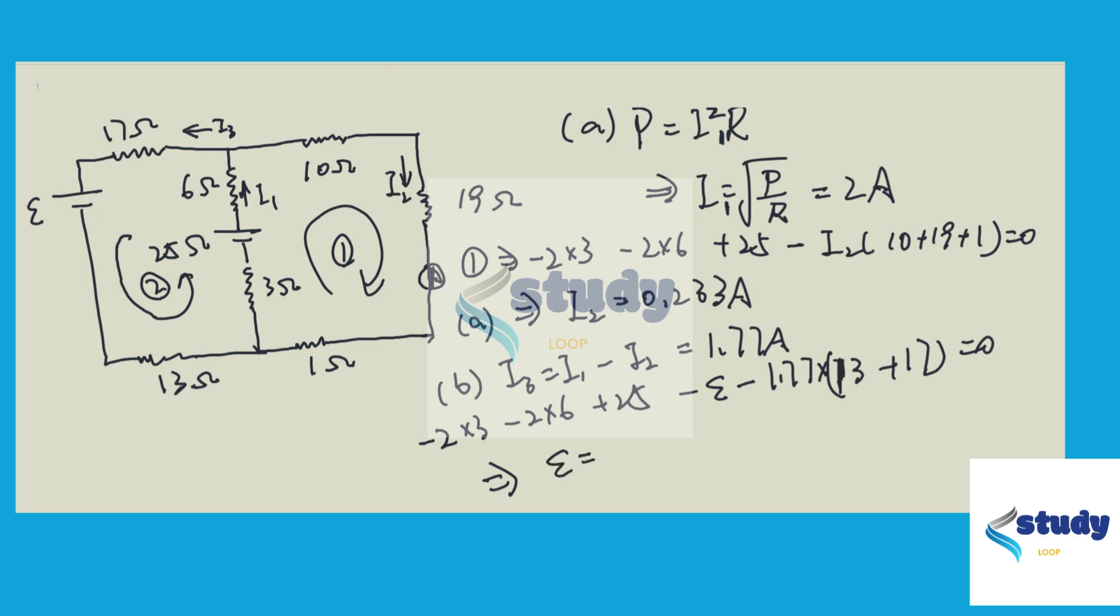So from this equation, we can see that the EMF equals negative 46.1 volt. So the EMF is 46.1 volt, and because of this negative sign, which means the polarity of the battery is opposite what they show here. It actually should be in the opposite direction.